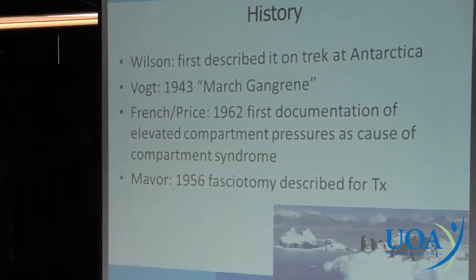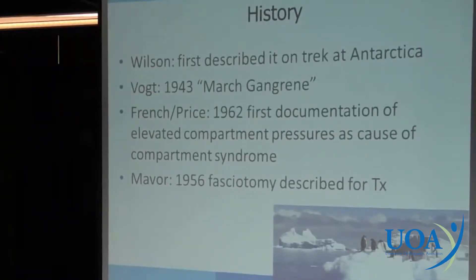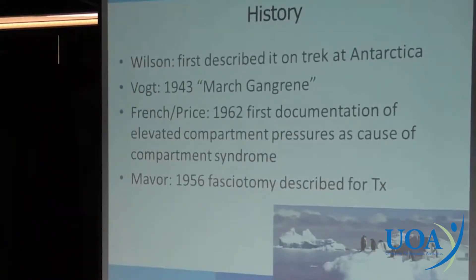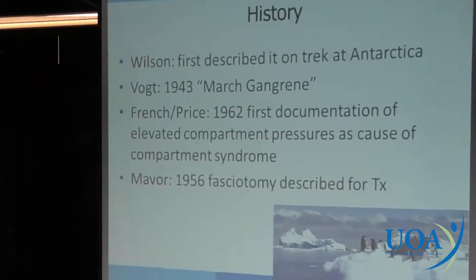Vaught in 1943 discussed it as March gangrene. French and Price in 1962 were the first ones that documented the pathophysiology — it was actually due to increased muscle swelling in a tight compartment, which causes elevation of pressures, decreased arterial inflow, and subsequent exertional compartment syndrome. And Maver first described fasciotomy as a treatment for this entity.